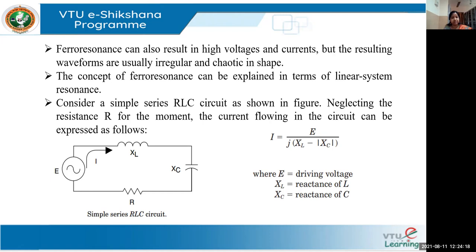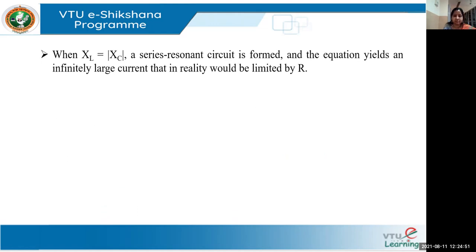What the resistance is doing here: when both XL and XC become the same, that means a very huge current flows in the circuit, and this huge current should be restricted with the help of the resistor. When XL equals the magnitude of XC, the series resonant phenomenon occurs — the current equation becomes infinitely large, and in reality would be limited by the value of R.